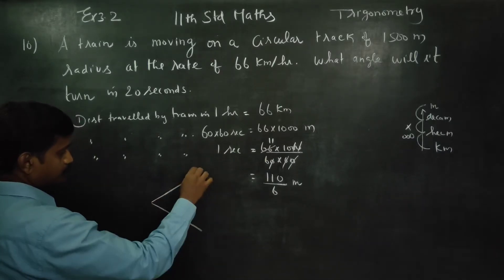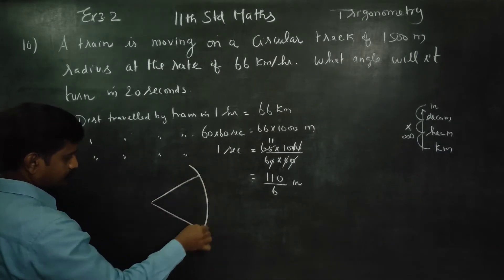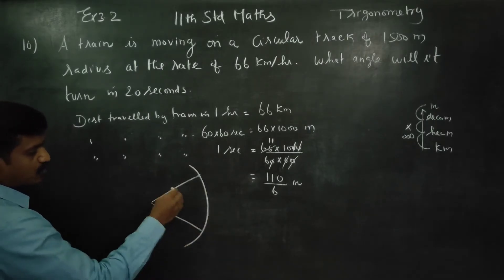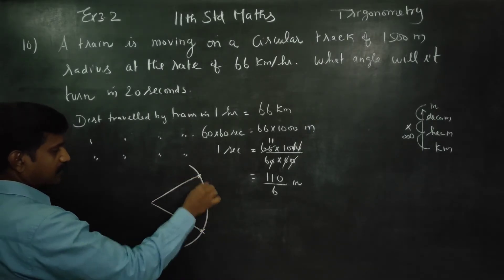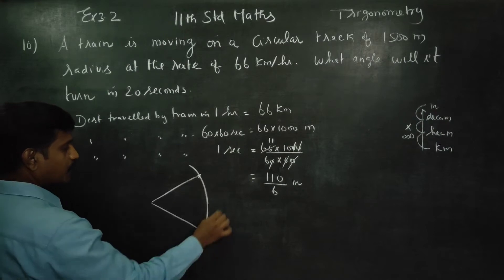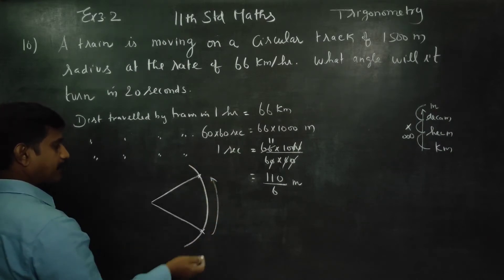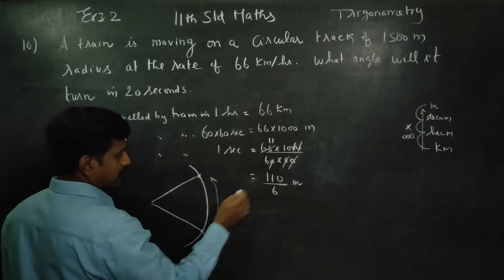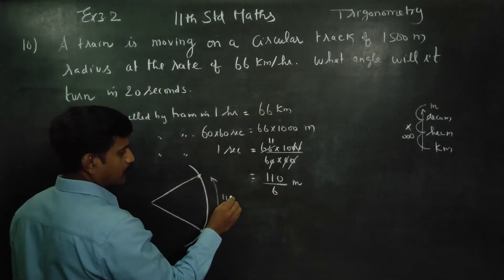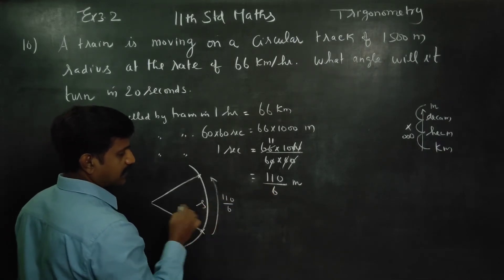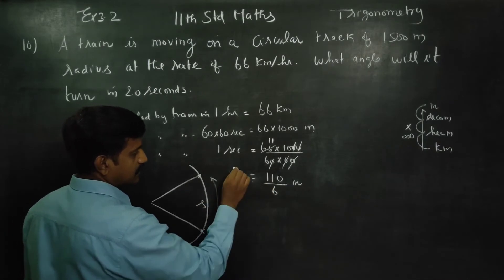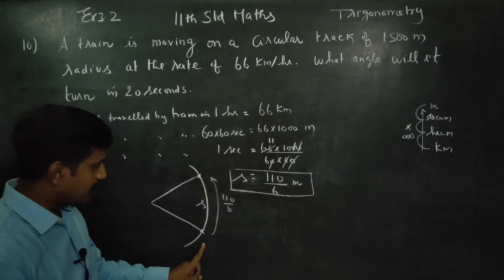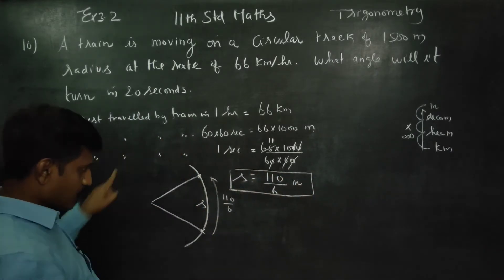The train is in circular motion. In 1 second, the arc length traveled is 110 by 6 meters. This is the arc length. The train is in circular motion, so we will use the arc length formula relating angle, radius, and distance traveled.